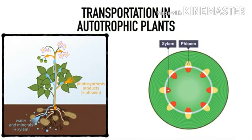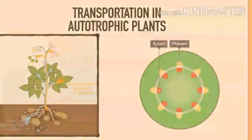Transportation in autotrophic plants. In human beings, the transportation of blood takes place through vessels — arteries and veins. In the same manner, in plants also, vessels are there. There are two types of vessels: xylem and phloem. In the picture, you can see the inner part which is red in color — they are xylem. And the outer part which is yellowish in color, that is phloem.